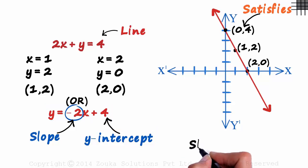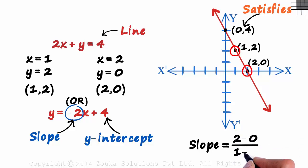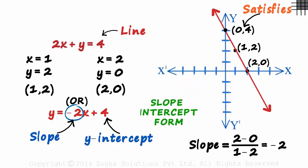It's y minus y1 over x minus x1. If we consider these two points, we get 2 minus 0 over 1 minus 2. That gives us minus 2, which is the same as this equation gives us. This is called the slope-intercept form. The general form is y is equal to mx plus b, where m is the slope and b is the y-intercept.